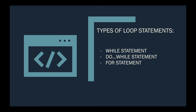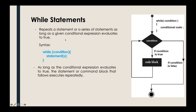Let me start by explaining the while statement. A while statement executes a statement or a series of statements as long as a given conditional expression evaluates to true. Looking at the flowchart, it executes the condition first — if true, it does something and loops back; if the condition is false, that's when it terminates the program.